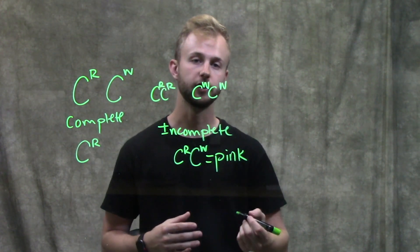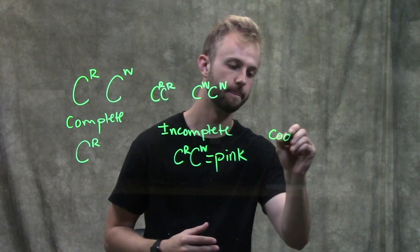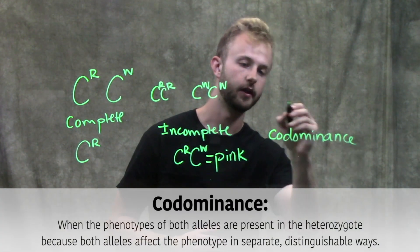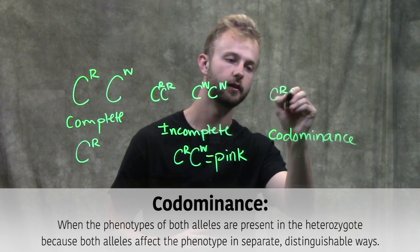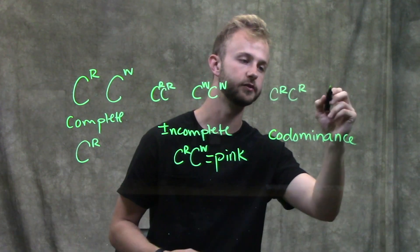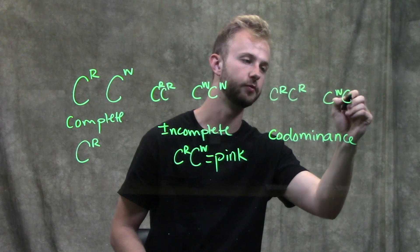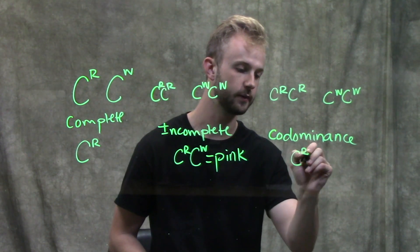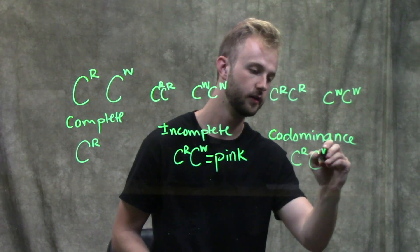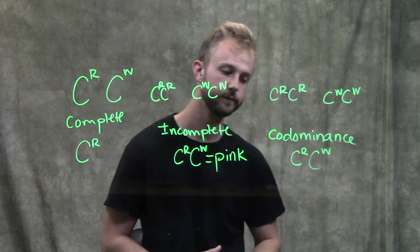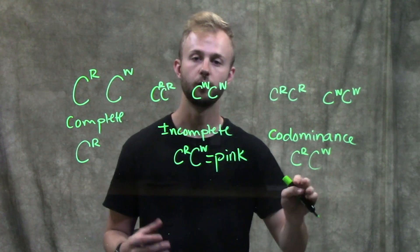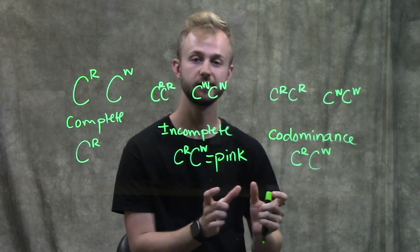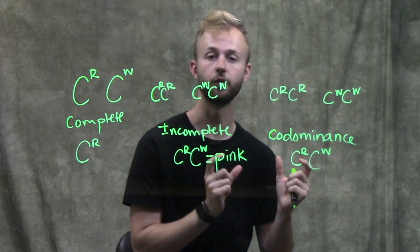Lastly, we're going to look at co-dominance. We'll again have two individuals — one with homozygous red flowers and one with homozygous white flowers. We'll cross them and the genotype of the offspring would be CR and CW. But in co-dominance, both of these alleles are going to get expressed simultaneously and independently of one another.